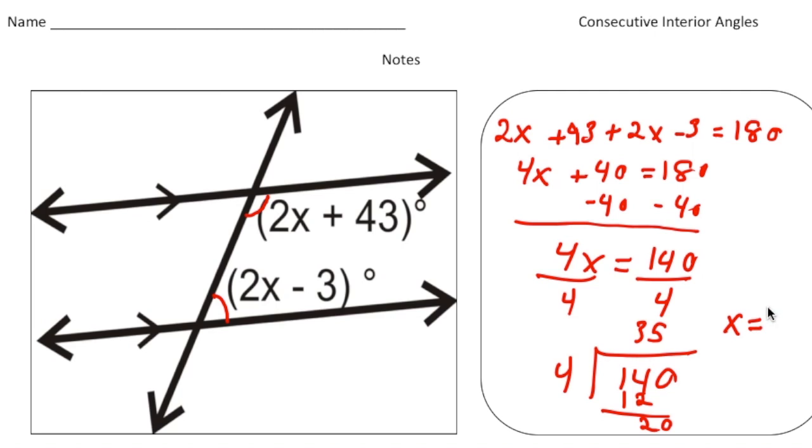So x is going to equal 35 degrees, but we're not quite done yet. We're almost there. Now what we're going to do is plug in 35 for x. So 2 times 35, that's 70, and 70 plus 43 will give us 113. So we know this angle here is 113 degrees.